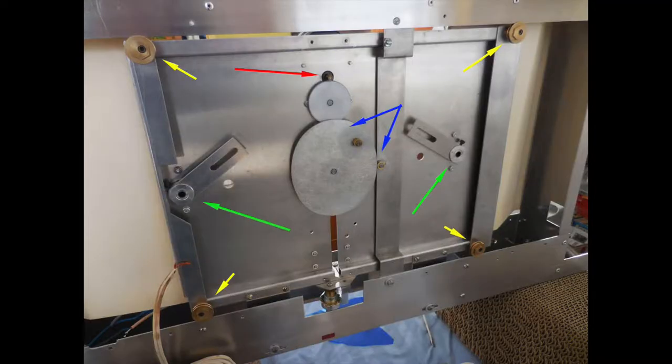This is what the backside of the Geochron looks like. The yellow arrows point to the wheels so the table can move left and right. The blue arrows point to a disk and a little follower that allows the disk to move the table to the left and the right. The red arrow points to where the motor drive is. And then the green arrows point to the axles that control where the shadow is and how it moves.